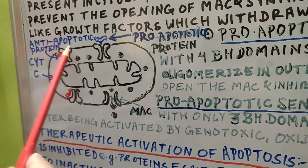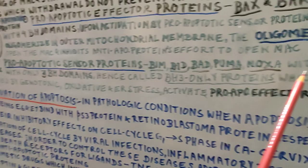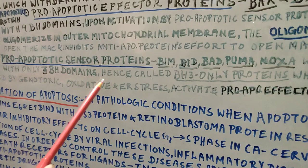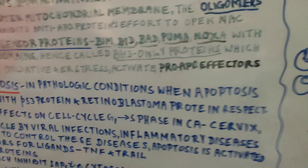The third type is pro-apoptotic sensor proteins — BIM, BID, BAD, PUMA, and NOXA. These have only three BH domains and are therefore called BH3-only proteins. After being activated by genotoxic, oxidative, and ER stresses, they activate the pro-apoptotic effector proteins. That is a revision of what you have already learned.